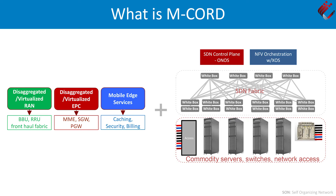Here is a pictorial view of what I described. On the left side you have the new services we are talking about, and on the right you have the CORD platform. In mobile CORD, we are talking about disaggregating the radio access network and virtualizing them. So you have BBUs and RRUs that are programmable, and BBUs that are virtualized. You have the EPC — Evolved Packet Core — that is being virtualized and disaggregated. So you have MME, SGW, and PGW, all of them in virtualized form. And finally, we can have new edge services at the mobile edge.